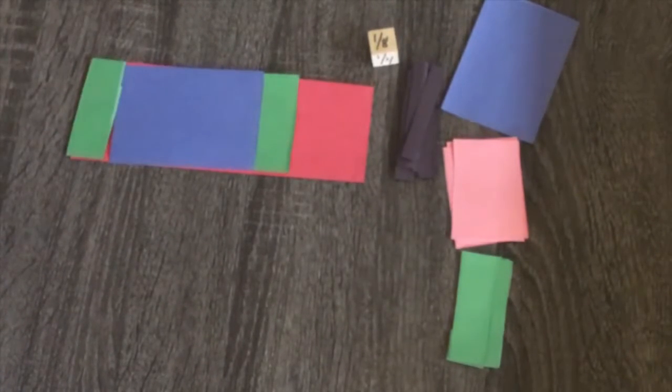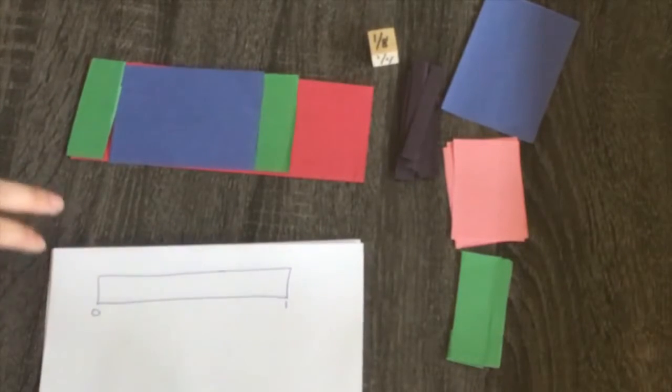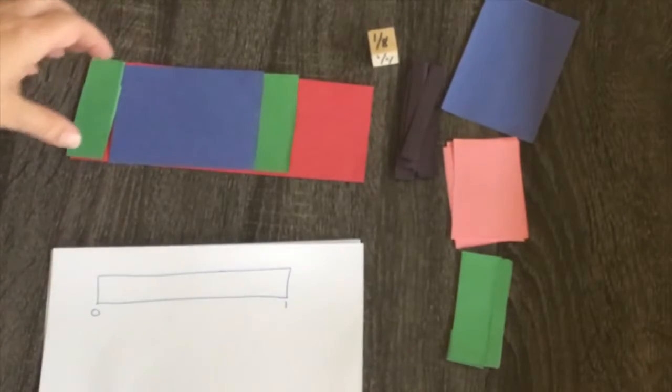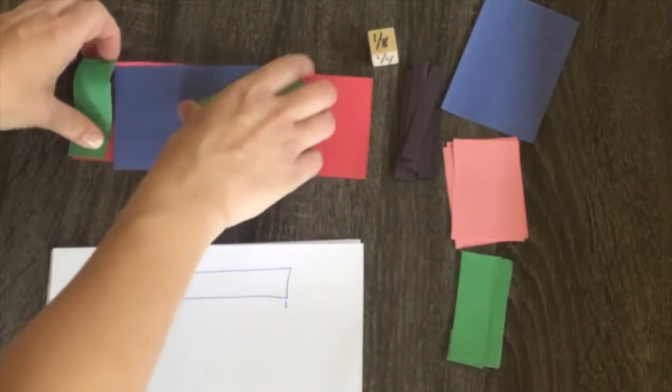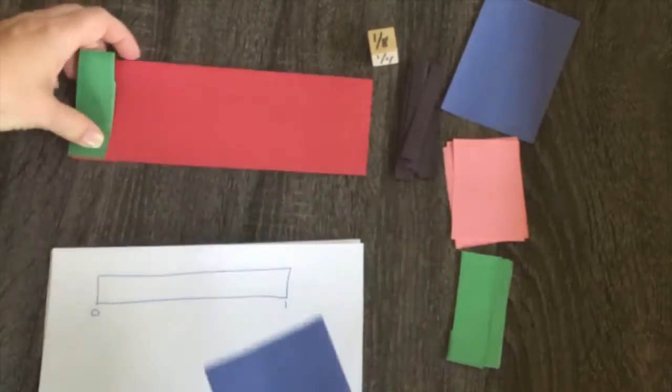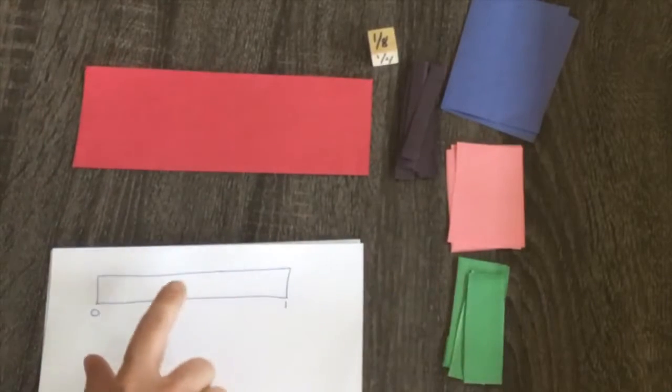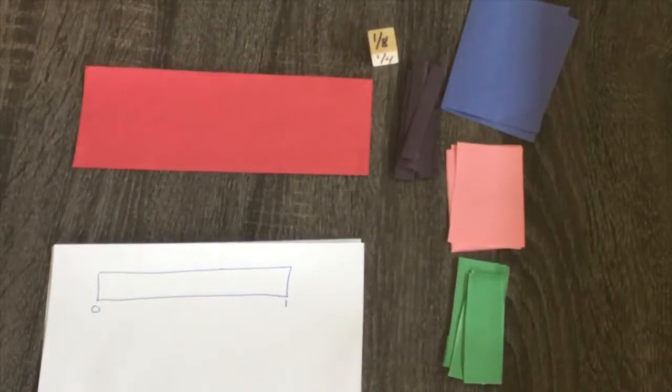So if this is our concrete, I'm going to have a tape diagram, also known as a bar model, as my representational. And as I'm going along, I'm going to have the kids draw a representation of what is happening on their game board right on their tape diagram.